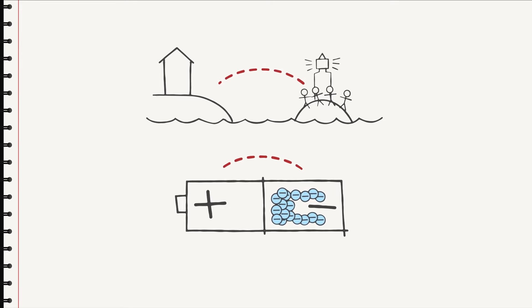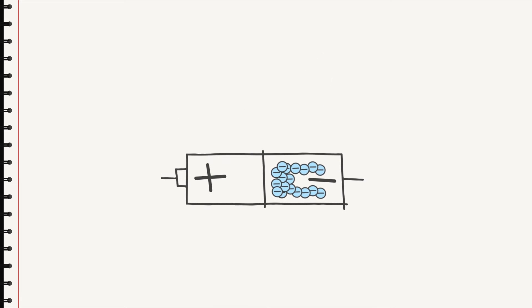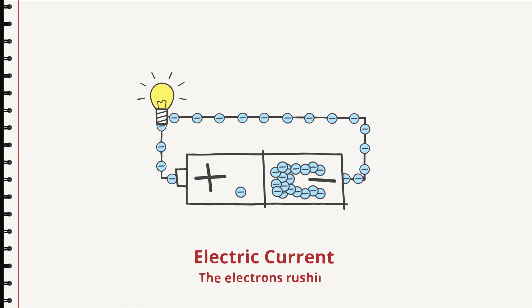But when it's electrons doing the yearning, we call it voltage. Then came the good fairy and built a bridge. Then the children's yearning could cause movement as the children run across the bridge. Same thing when you turn on the flashlight. Then the electrons rush through the thin wire inside the lamp. The number of electrons that rush through the wire every second is what we call electric current.